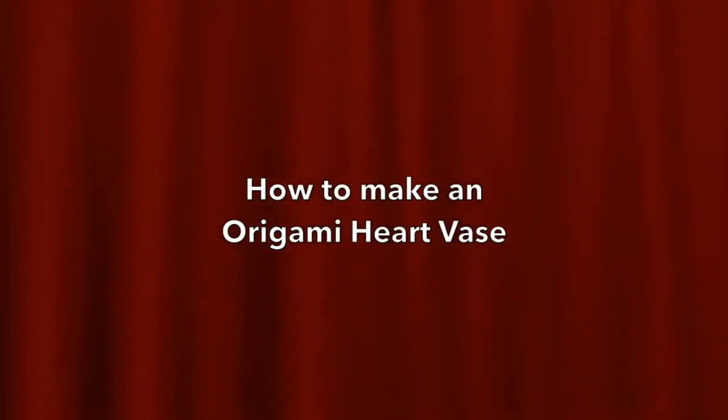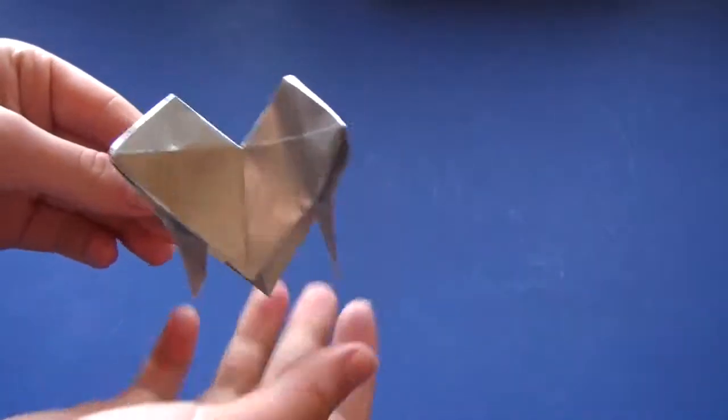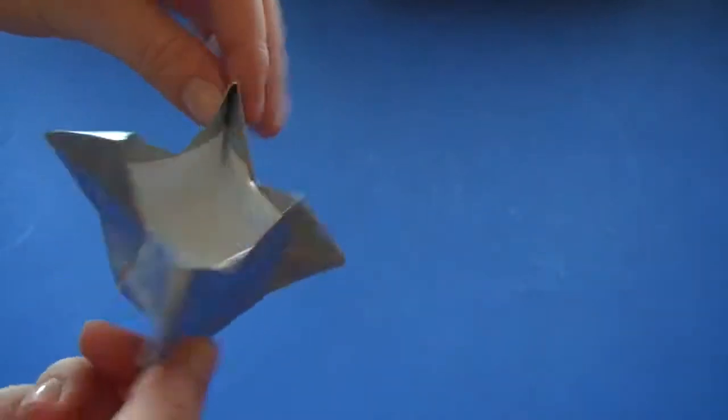Hi, today we're going to do an origami heart vase. It's small and it looks like there's a heart right here, and there's four hearts. So let's get started.